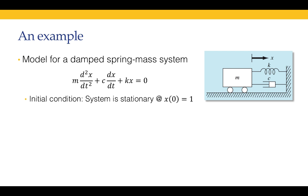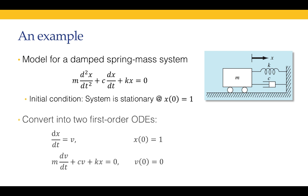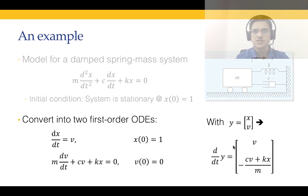We need to convert this second-order ODE into a system of first-order ordinary differential equations. We do this by letting dx/dt equal a new variable v, giving us: m·dv/dt + c·v + k·x = 0. This yields two first-order ODEs: dx/dt = v and dv/dt = -(c·v + k·x)/m, with initial conditions x(0)=1 and v(0)=0. We then convert this into a matrix differential equation.